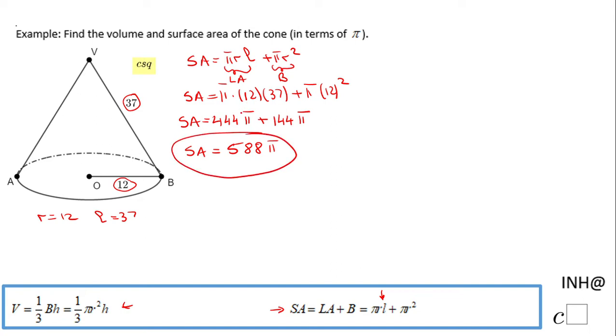The surface area of this cone is 588π square units. And now we can move to the volume but first of all for finding the volume we need to find the height of the cone which is this segment VO. And if you notice this triangle will be a right triangle.